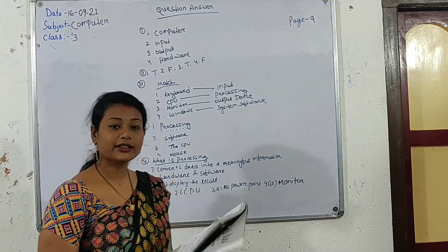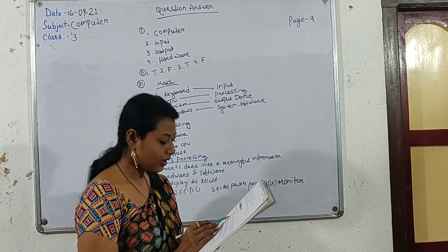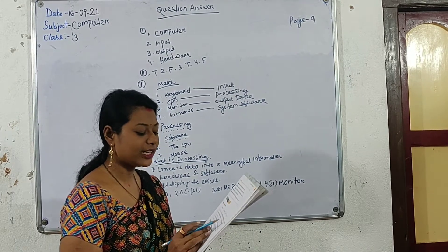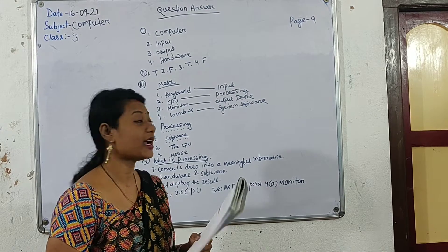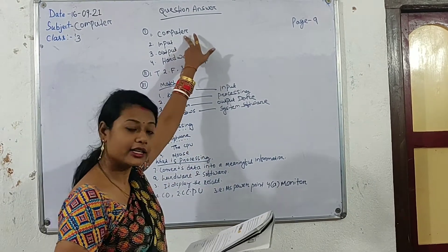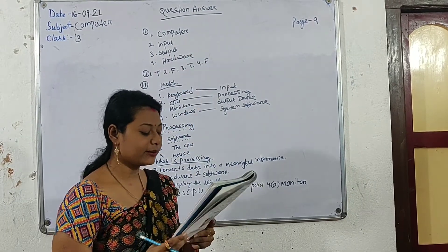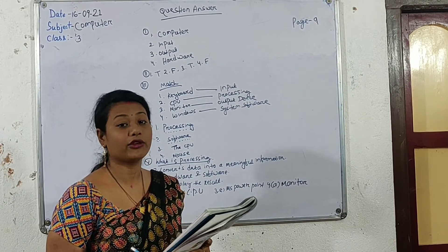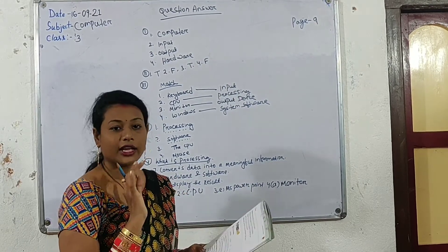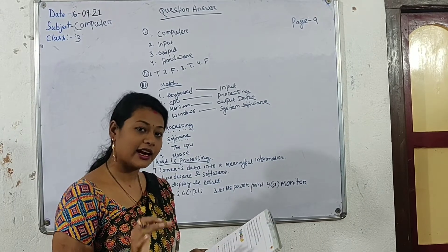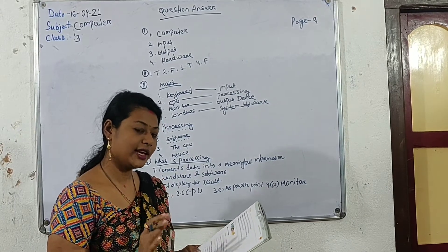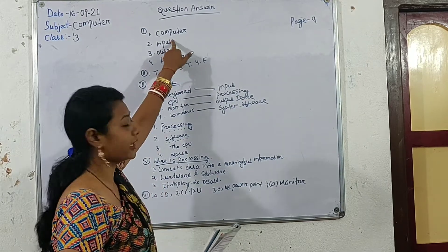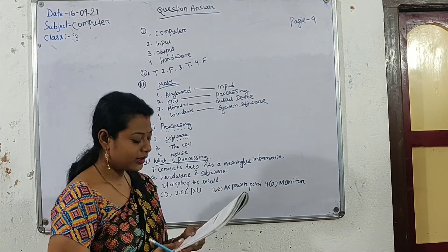Let's see the first number. First number is fill in the blanks. Number 1: This is a machine that is used to generate information from data — what is it? This is the computer. Second number: Data or instructions entered into a computer using a keyboard is called what? If we enter data by typing on a keyboard, this is called input. The answer is input.